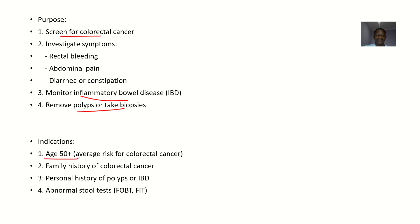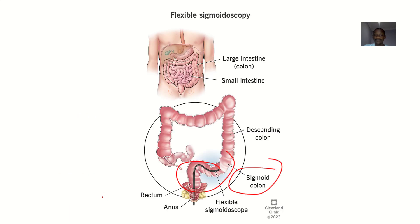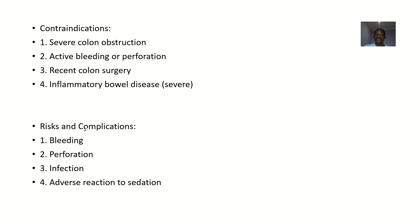Indications: people aged 50 years and above with average risk for colorectal cancer. If they complain of bleeding, this should be done as soon as possible. Also indicated for people with a family history of colorectal cancer, a personal history of polyps or inflammatory bowel disease, or abnormal stool test results.